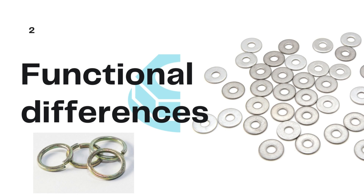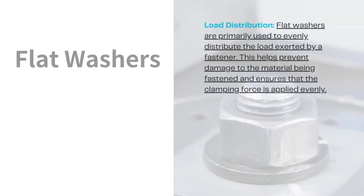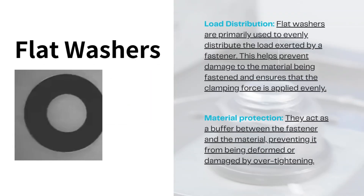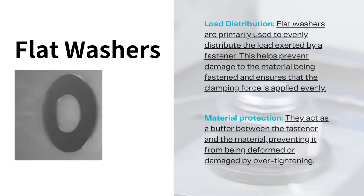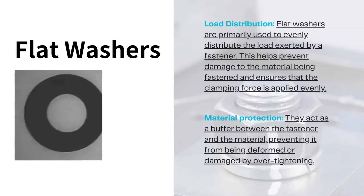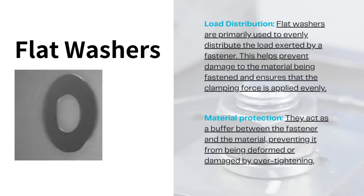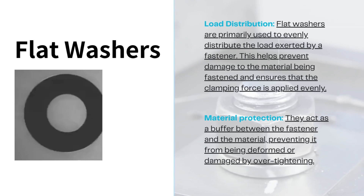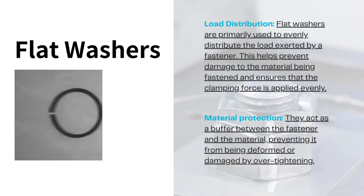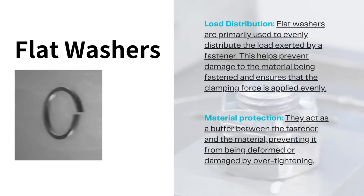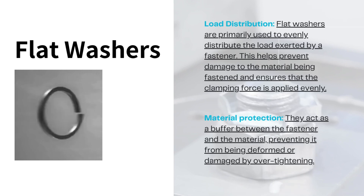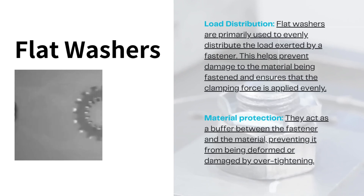Flat washers. Load distribution: flat washers are primarily used to evenly distribute the load exerted by a fastener. This helps prevent damage to the material being fastened and ensures that the clamping force is applied evenly. Material protection: they act as a buffer between the fastener and the material, preventing it from being deformed or damaged by over-tightening.